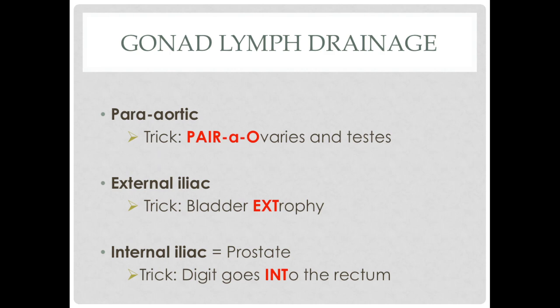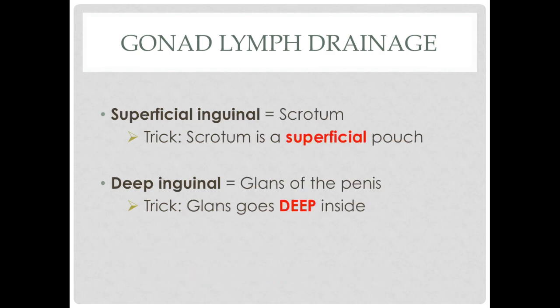The lymphatic drainage of the gonads is fairly high yield. Bear in mind some of these tricks are better than others. For para-aortic lymph nodes, think of peri-ovaries and testes — a pair of ovaries and testes. External iliac, think of bladder exstrophy. Internal iliac, which drains the prostate, makes me think of a digital rectal exam where the digit goes into the rectum. The superficial inguinal drains the scrotum — think that the scrotum is a superficial pouch that holds the testes.